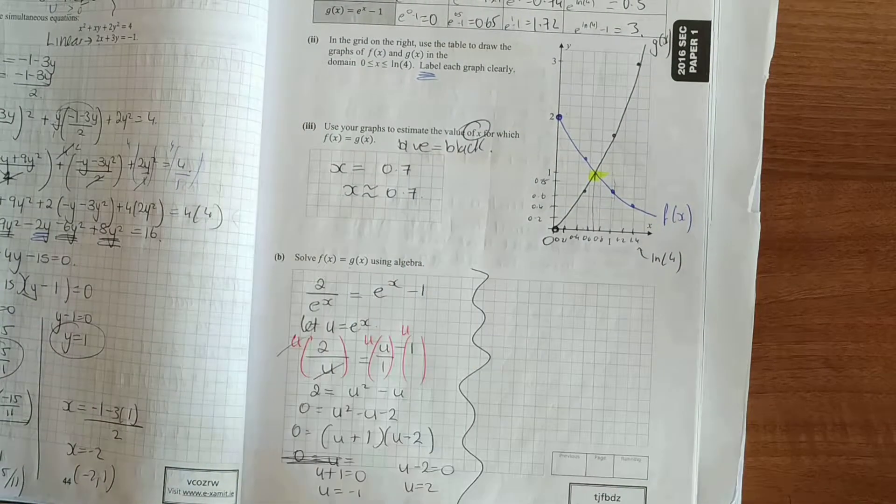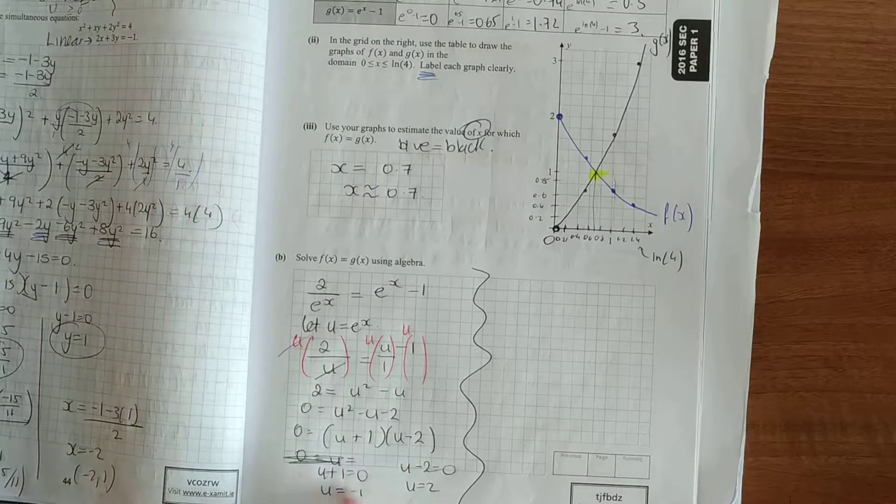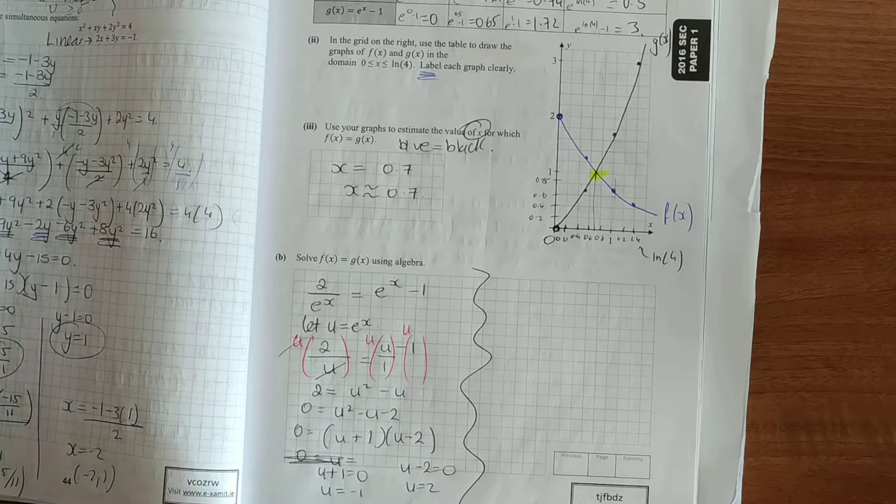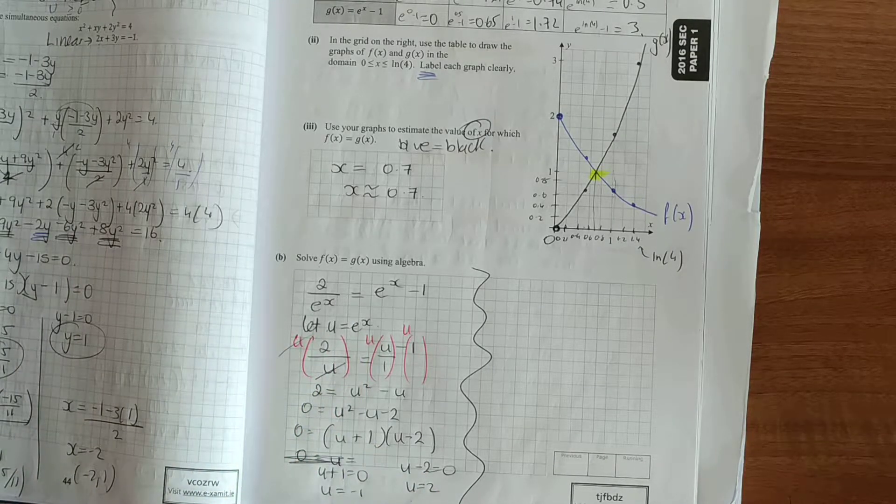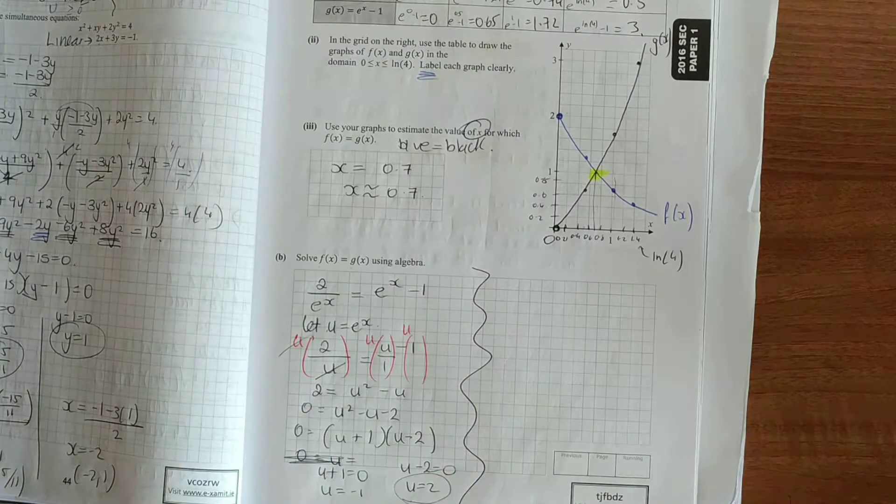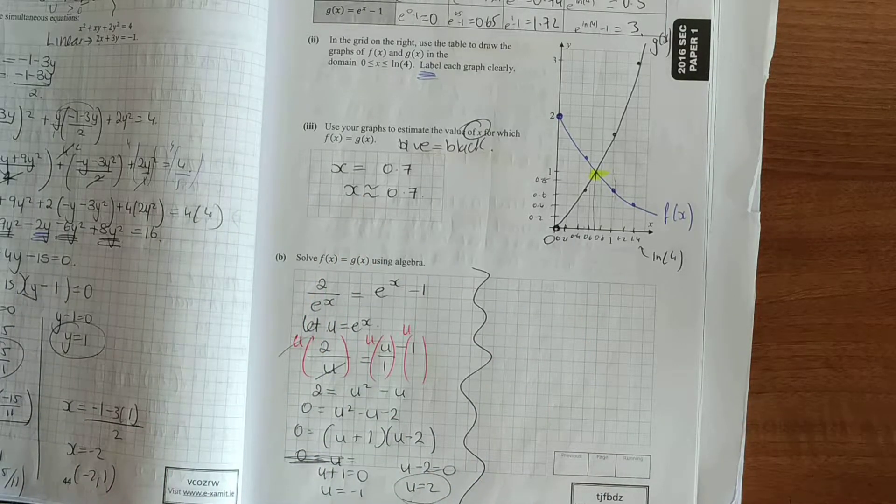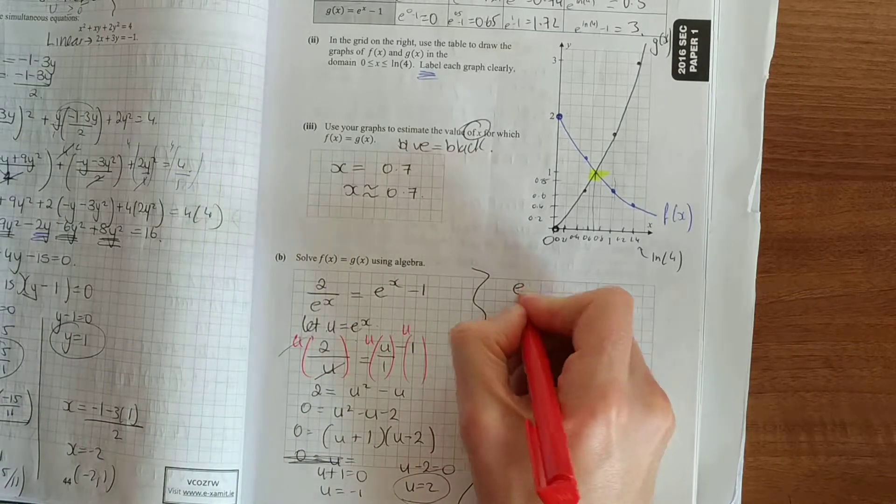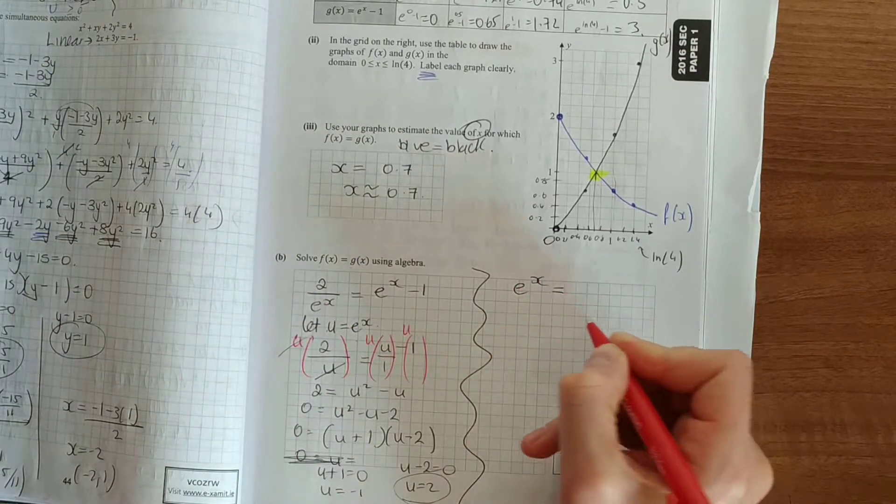Now, they haven't asked us for what u is. But we go back to what our substitution here suggests. So u is equal to e to the x. We're using our positive value here, we're only going to get one answer in a way, as we can see from up there. So, e to the x is equal to 2.